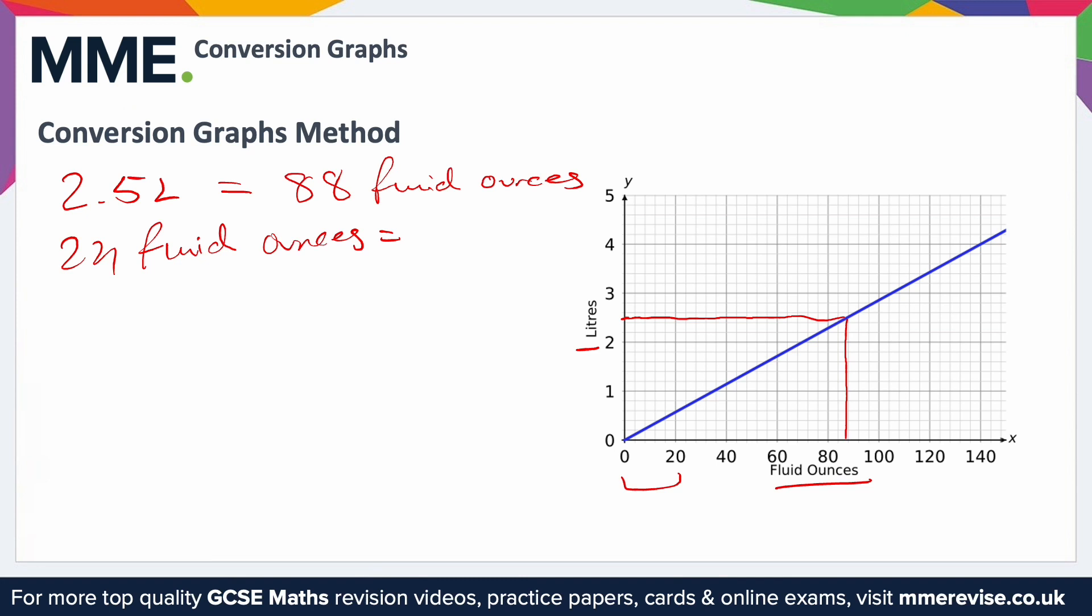All we would need to do is find 24. Recall that each minor square is worth 4 in this case, so that's going to be here, one minor square past 20. So we go up to where that meets the graph, and then we go across to where that meets the y-axis.